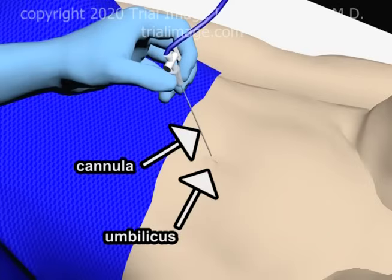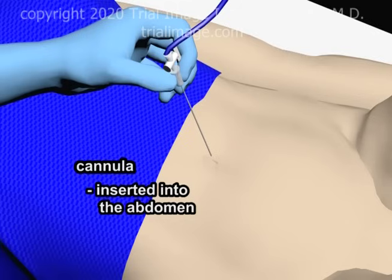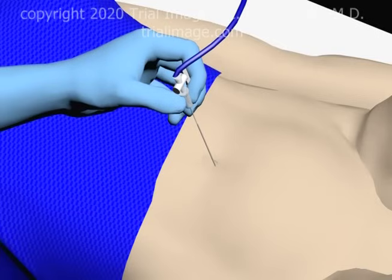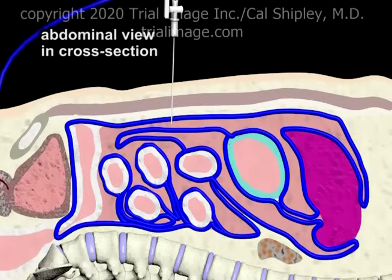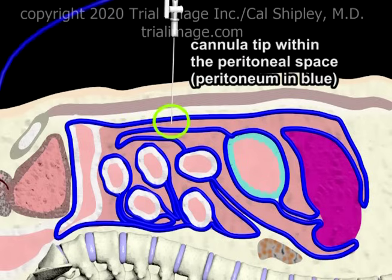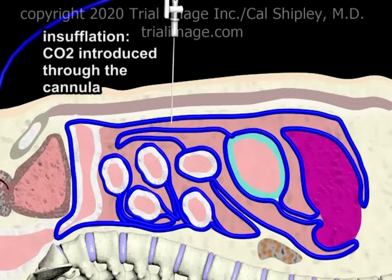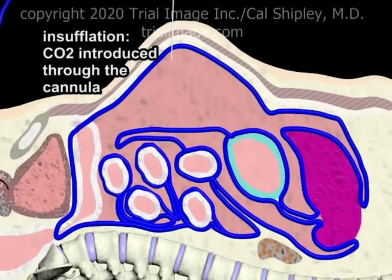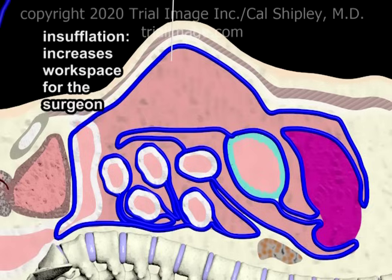The first step in the procedure is to insert a thin, needle-like cannula into the abdomen in the area of the umbilicus. Viewing the abdomen from the left side in a cross-sectional view, we can see the cannula inserted into the peritoneal space. In a process known as insufflation, carbon dioxide gas is passed through the cannula into the peritoneal space. Insufflation increases the workspace within the abdominal cavity for the surgeon to manipulate instruments during the procedure.